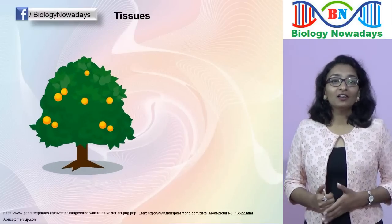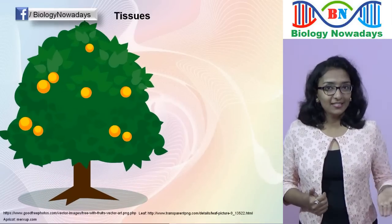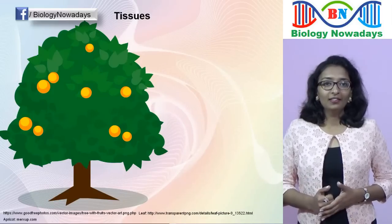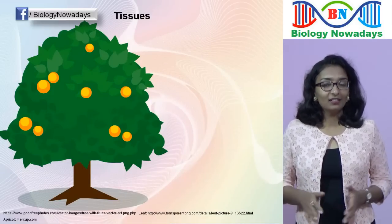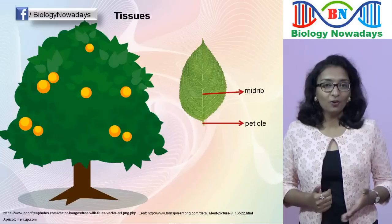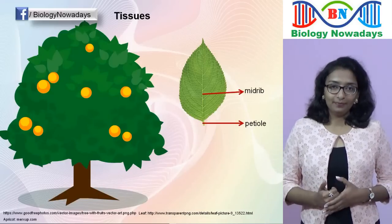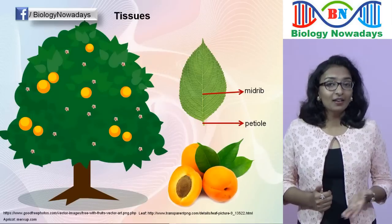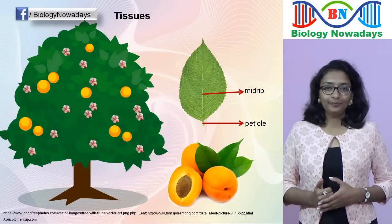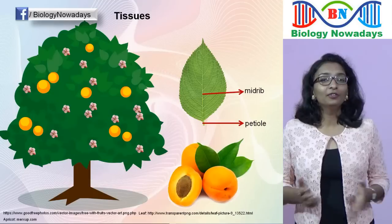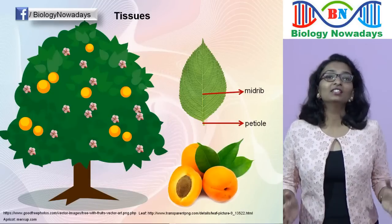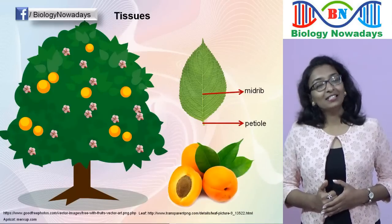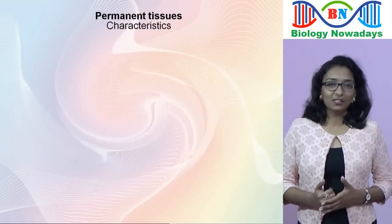In the case of a tree, there are woody parts like the woody stem and older roots, then not-so-woody parts like young stems, petioles and midribs of leaves, and also very soft regions like flowers and pulp of fruits. These different regions are made up of different kinds of permanent tissues having different functions.